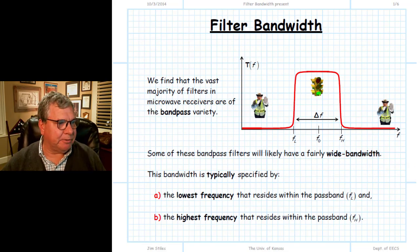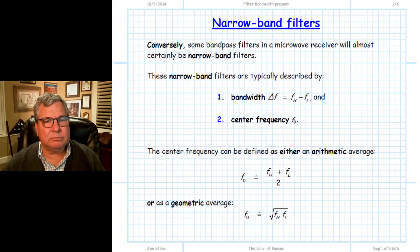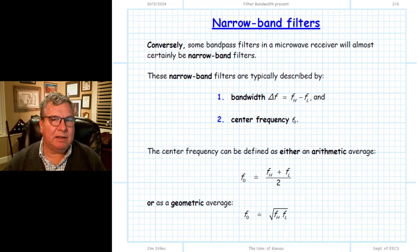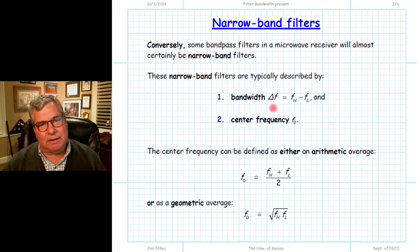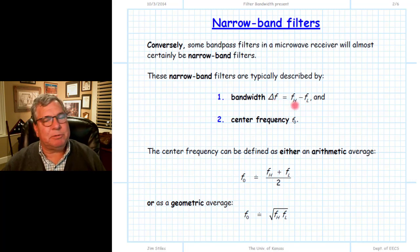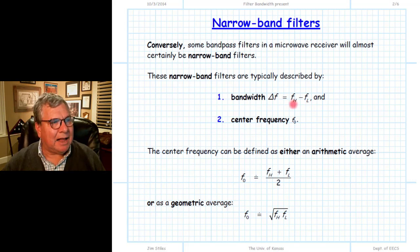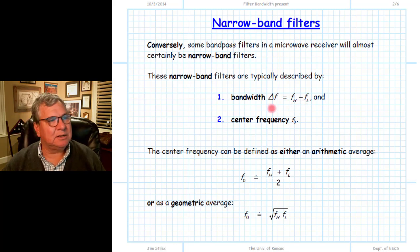What about a narrowband filter? A narrowband filter we describe with two frequency values as well, but instead of low frequency and high frequency, we typically describe its pass band in terms of a center frequency — the frequency at the center of the pass band — and then a bandwidth given in Hertz, megahertz, or gigahertz. This delta is simply the difference between the high half-power frequency and the low half-power frequency, and F0 is the center.